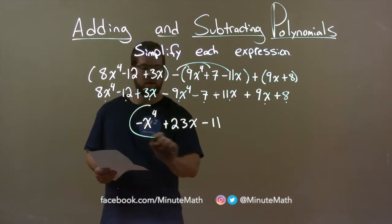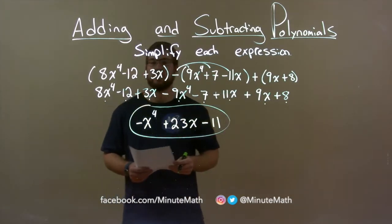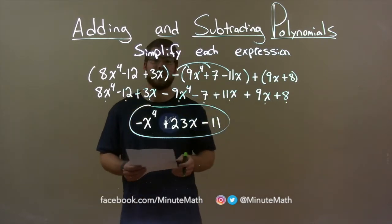Everything was brought down. Our final answer: minus x to the 4th power plus 23x minus 11.